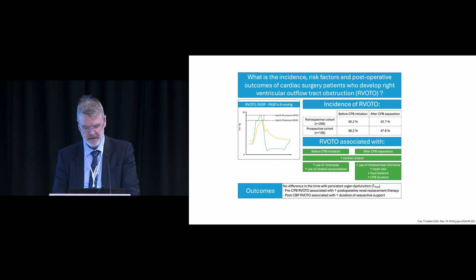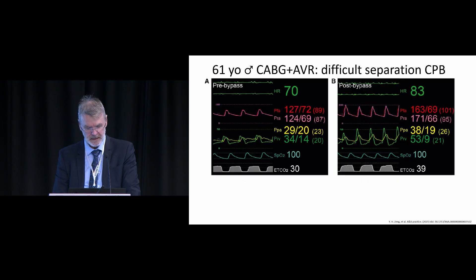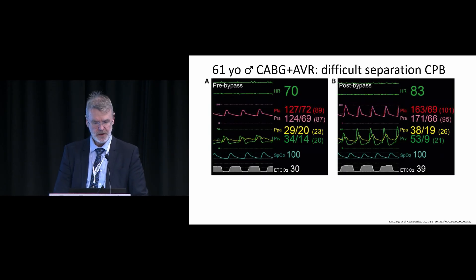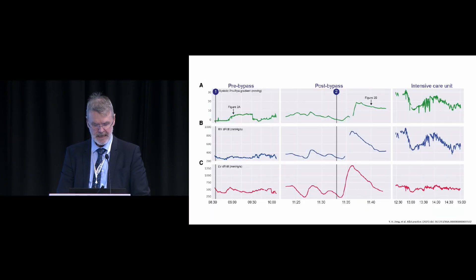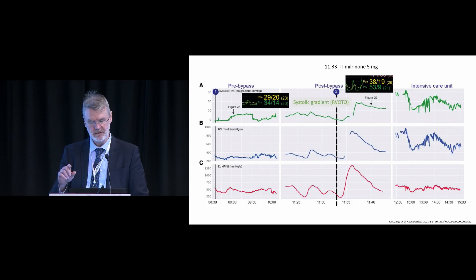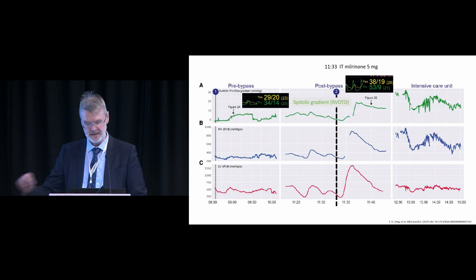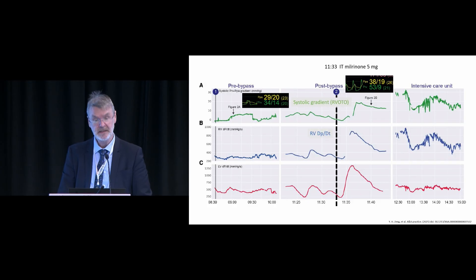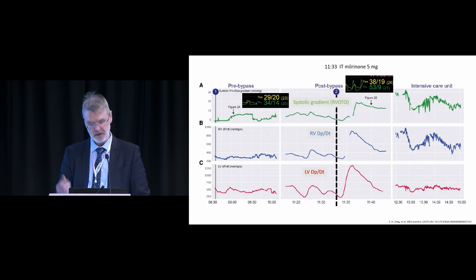Here is a case from the Paceport study: a patient with difficult separation from bypass after CABG and AVR, showing a gradient after bypass. We were able to record the gradient continuously. After bypass at 11:33, five milligrams of intracoronary milrinone was given, and you can see a significant increase in right ventricular outflow tract obstruction — the gradient increased and persisted up to five hours into the ICU. Notably, both the RV dP/dt and LV dP/dt also increased, indicating that intracoronary milrinone has an effect not only on the right ventricle but also on the left ventricle, lasting up to five hours.